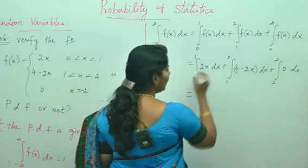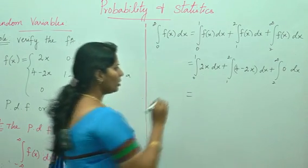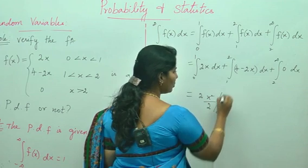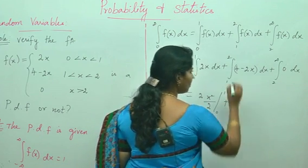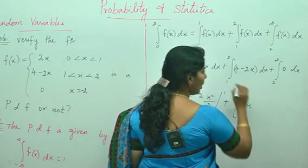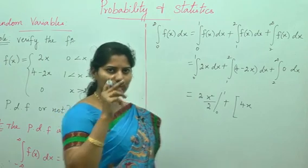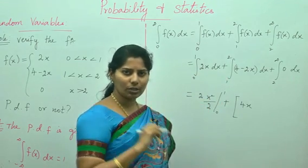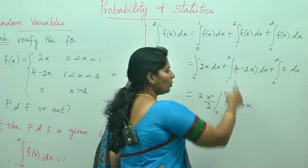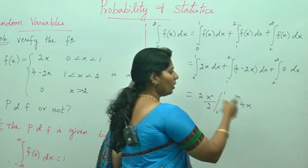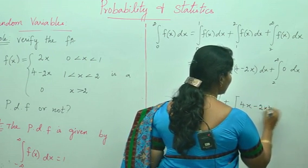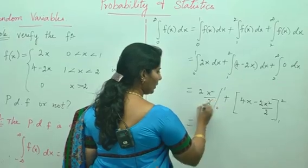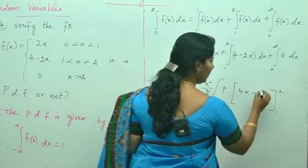Now integrate with respect to x. For the first term: 2 × (x²/2) with limits 0 to 1. Note the difference between differentiation and integration — for a constant in integration you get the constant times x. So the second term gives: 4x − 2x²/2, with limits 1 to 2. We can cancel the 2s, simplifying both terms.